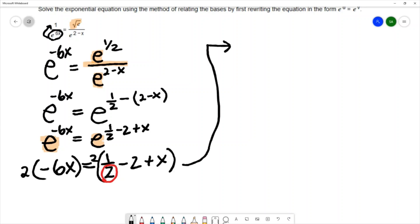This gives negative 12x equals 1 minus 4 plus 2x. Now what I did is I used the distributive property and the 2s cancelled. I used the distributive property again - 2 times negative 2 is negative 4 and then 2 times x is 2x.